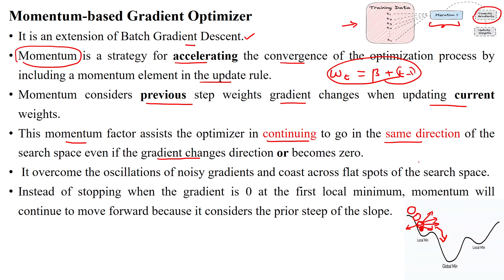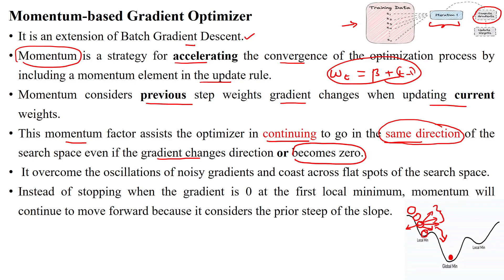The momentum factor makes the gradients move in the same direction even when there are multiple directions in the search space. When some gradients become zero, the gradient gets stuck at a local minimum — this is one of the issues in batch gradient descent, and it is avoided by using the momentum factor.